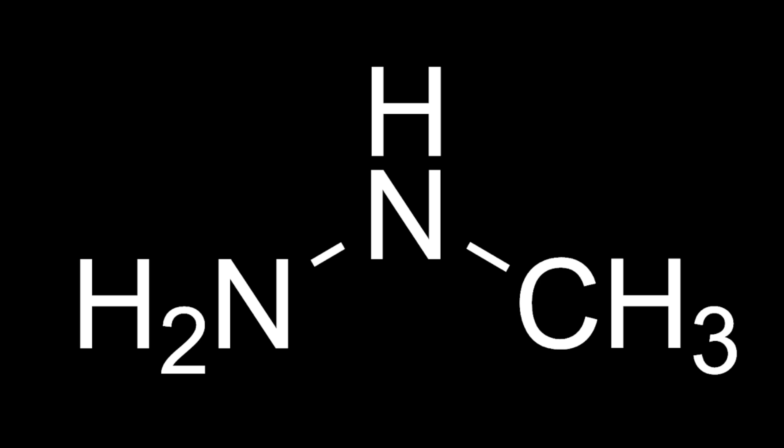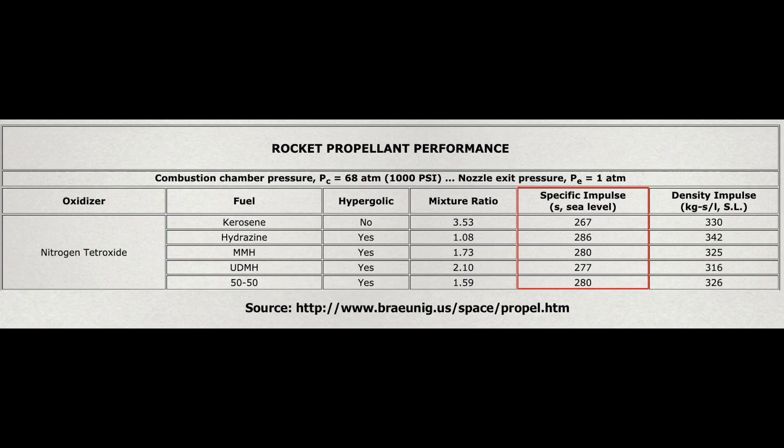So instead, we have monomethyl hydrazine. This replaces one of the hydrogen atoms with a methyl group — that is, a carbon and 3 hydrogen atoms. This lowers the freezing point down to minus 52 Celsius and makes it far more stable. These benefits do come at a cost: you get a little less performance compared to pure hydrazine.